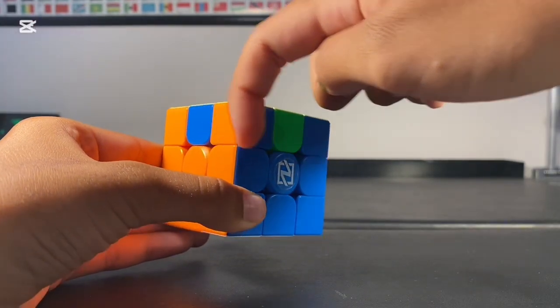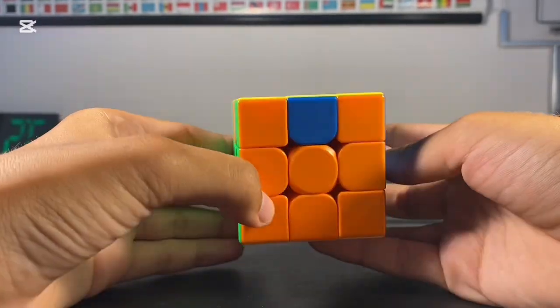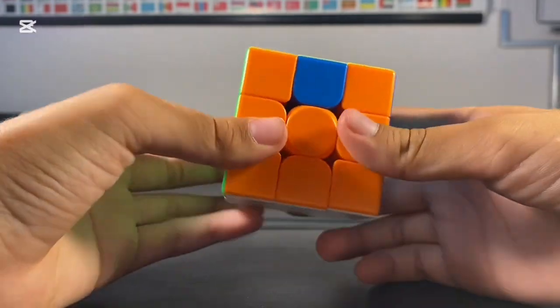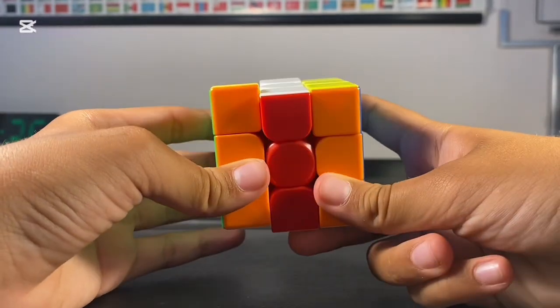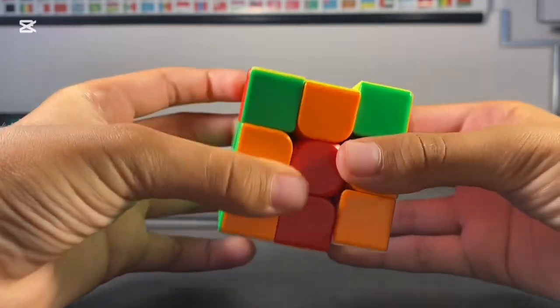Last but not least, you have to permutate the edges. There are four cases to that. Number one, clockwise turn. In this case, the edges have to turn one time clockwise to be in their positions. The algorithm is M-2-U-M-2-U-2-M-2-U-M-2.